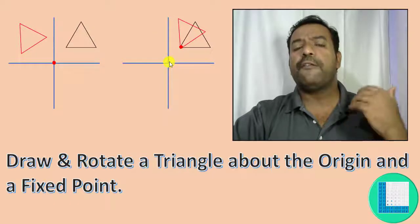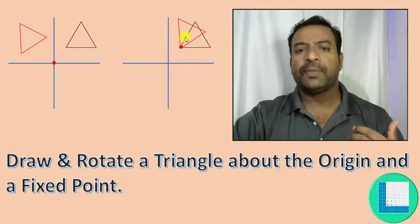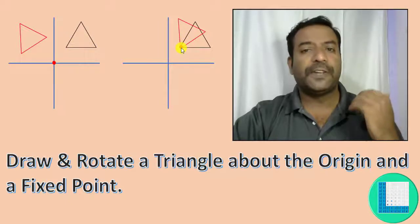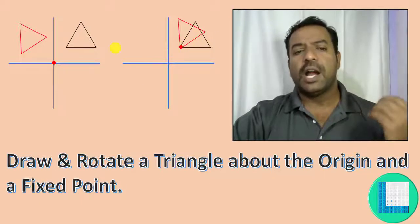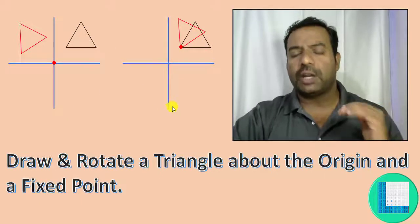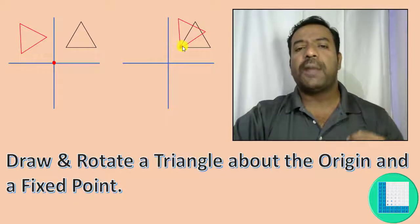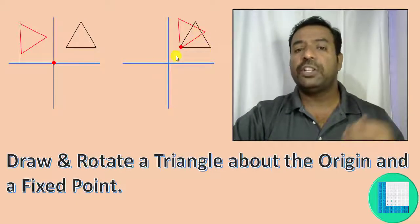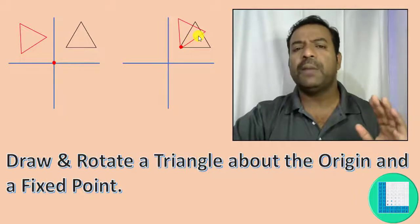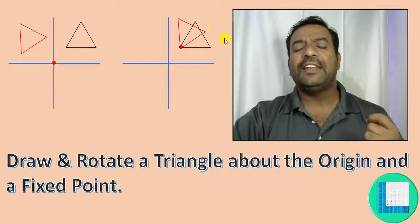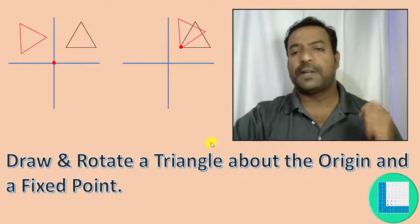But if I want the rotation to happen at a specific point of the triangle, we call this fixed point rotation or pivot point rotation. We need to use some technique here to make sure the rotation will be applied to whichever point I choose. Including the origin, it should be able to rotate at any given point, and that is what we are going to discuss in this program.